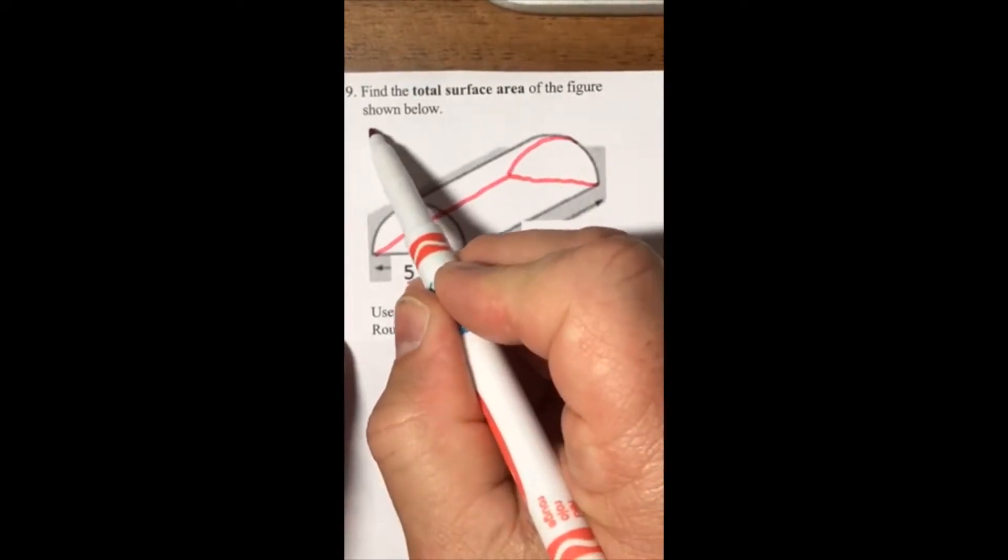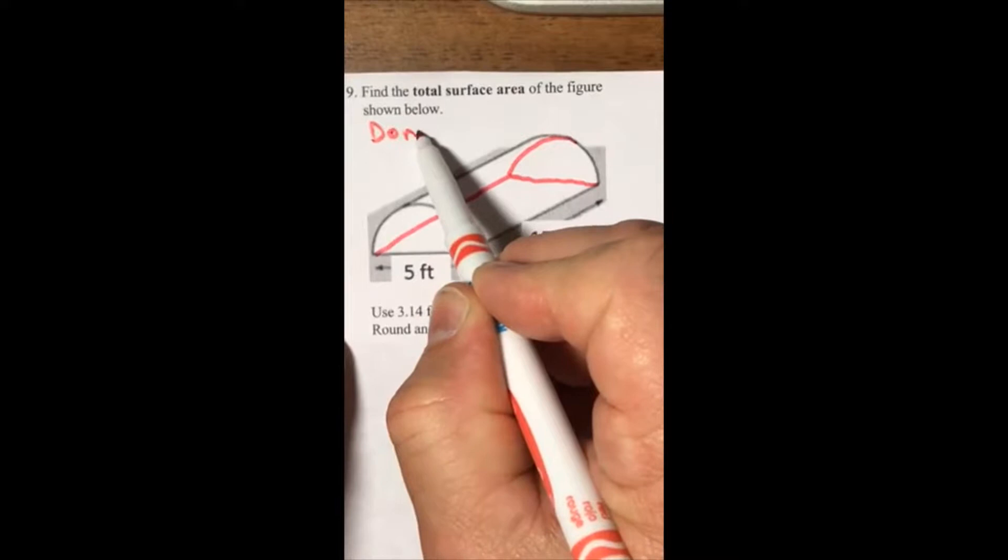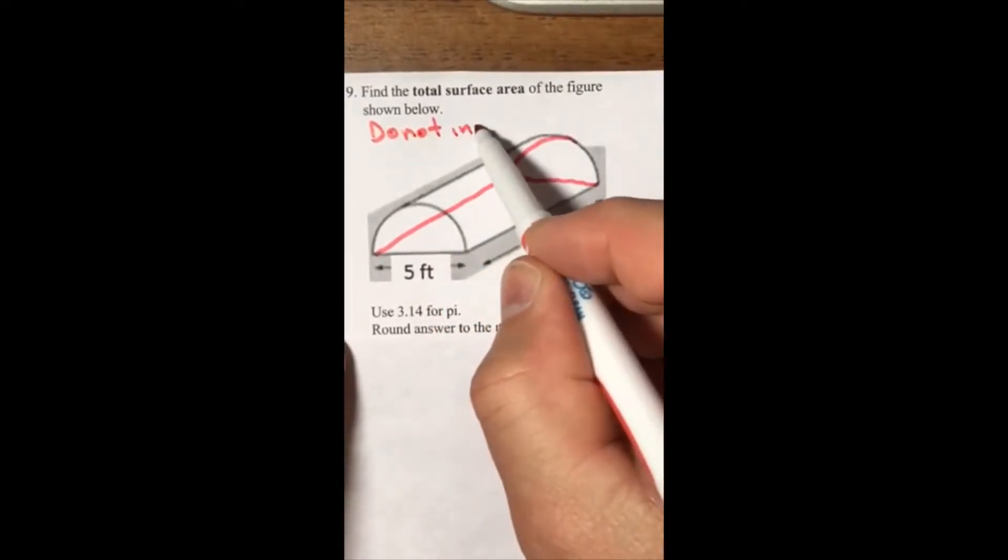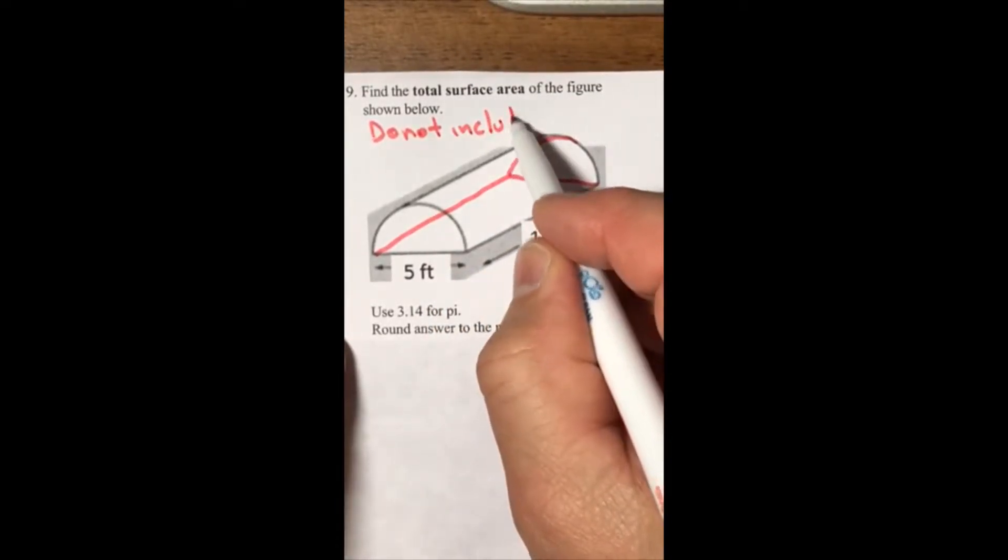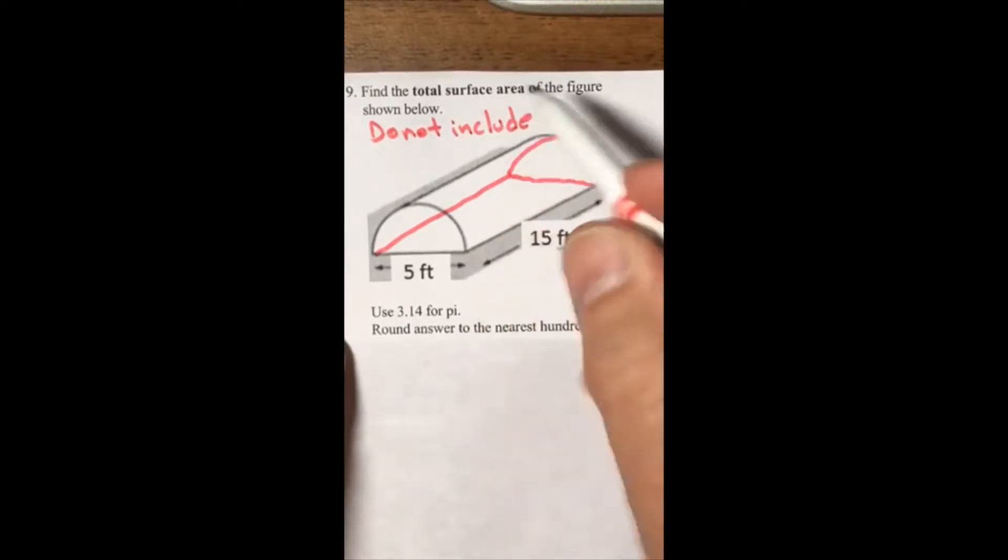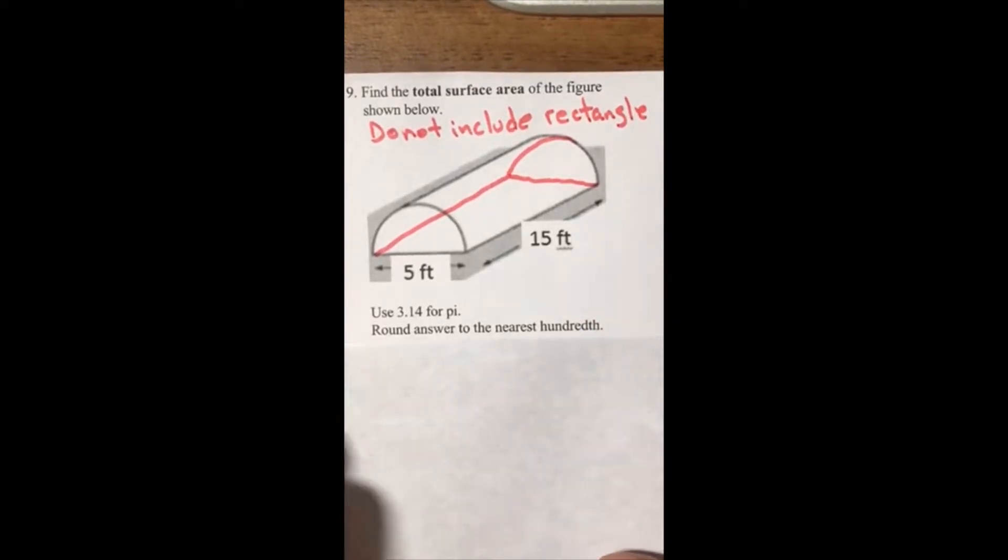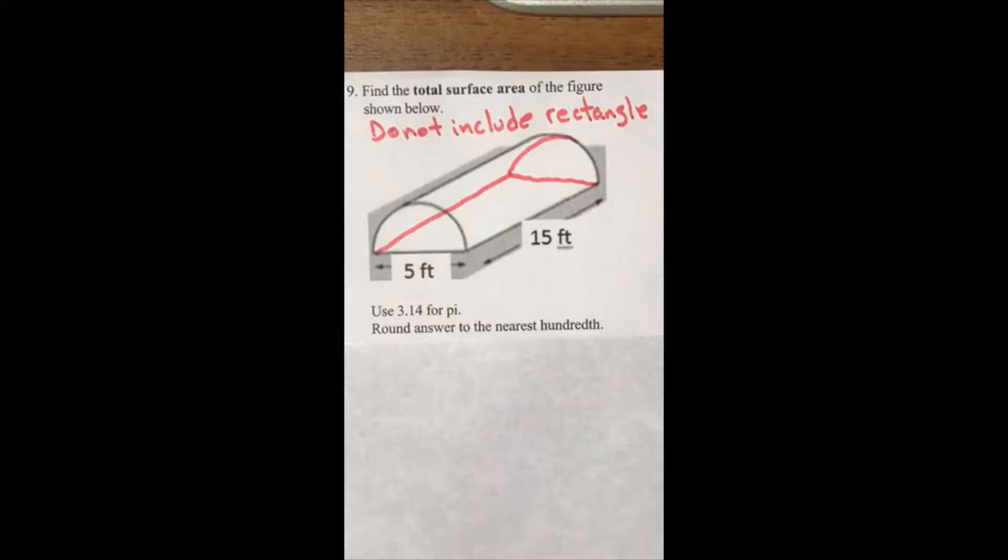Do not include the rectangle. Okay, go to your formula chart and get the total surface area of a cylinder. So all we have is a cylinder, but we want to cut it in half. Imagine a Coke can or soup can cut vertically in half.